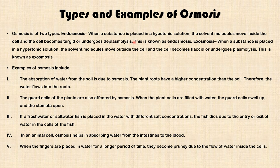Now we are going to look at the types and examples of osmosis. Osmosis is of two types. We have endosmosis: when a substance is placed in a hypotonic solution, the solvent molecules move inside the cell and the cell becomes turgid or undergoes plasmolysis — this is known as endosmosis. Exosmosis is when a substance is placed in a hypertonic solution; the solvent molecules move outside the cell and the cell becomes flaccid or undergoes plasmolysis — this is known as exosmosis.